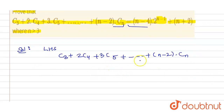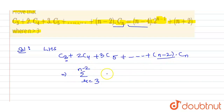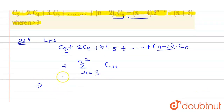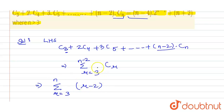Coming to the solution, we have LHS = C3 + 2C4 + 3C5 + ... + (n-2)·Cn. This can be written as summation r = 3 to n of (r-2)·nCr. The last term is in (n-2) form, so r-2·nCr.